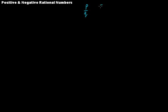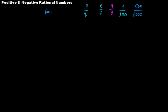Let's take a few examples: 5 over 7, 9 over 8, 1 over 100, 500 over 1000. The numerator and the denominator in all these examples are positive integers. In all such cases where both the numerator and the denominator are positive integers, we say that the rational number is a positive rational number.